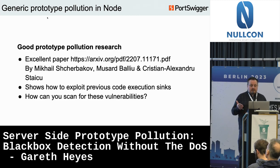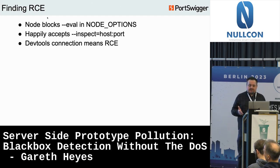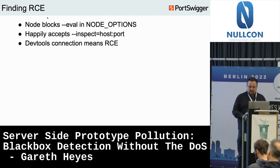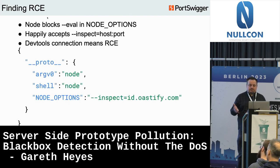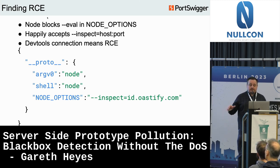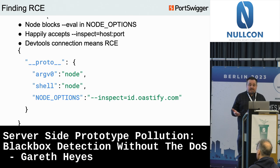How would you scan for vulnerabilities asynchronously? Node blocks certain command line arguments like --eval in node options. However, if you use --inspect, it allows you to specify a remote host to create a remote debugging session — this creates a DNS interaction, which is perfect for scanning. You pass --inspect and then your callback host. If you can control the --inspect flag, you can execute arbitrary commands on the server, which is obviously really serious.